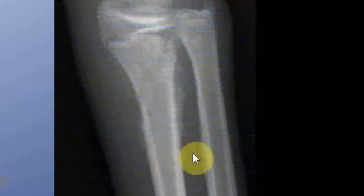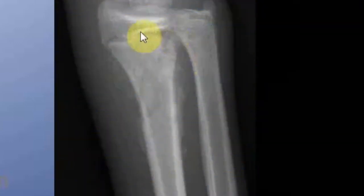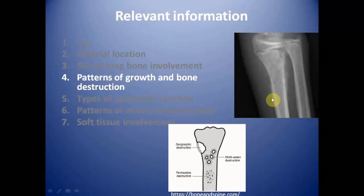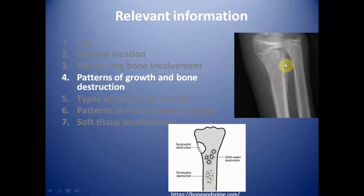This is a case of osteosarcoma and we can see there is a permeative pattern of bone destruction. This lesion has a wide zone of transition — we cannot draw a line distinguishing diseased bone from healthy bone. The wide zone of transition and permeative pattern of bone destruction indicate this is a malignant bone tumor.